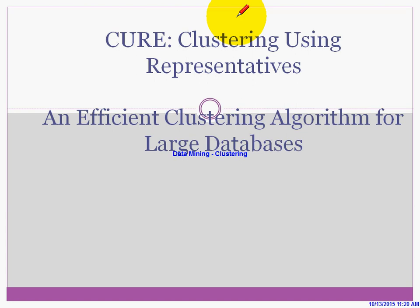Yesterday we discussed the BIRCH algorithm. BIRCH is a balanced and iterative algorithm that reduces searching using clustering, making use of a tree data structure to cluster objects. It consists of two important things: one is your branching factor to determine the number of branches, and the second one is your threshold which determines the number of objects that can be accommodated into a node.